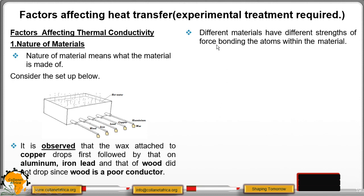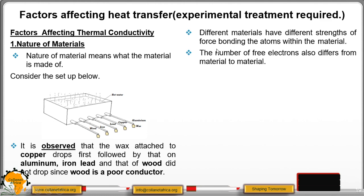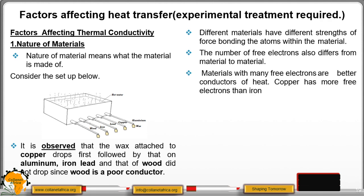Different materials have different strength of force bonding the atoms within the materials. Also, different materials have different numbers of free electrons. If a material has many free electrons, it will be a better conductor than other materials. Copper has more free electrons than iron, and that is why the wax from the copper falls first.